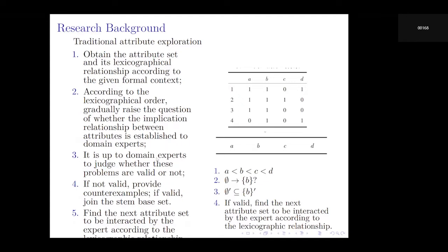The domain expert will judge it. If it's not valid, then provide a counter-example. If it's valid, then join the stem base set. Then, find the next attribute set to be examined by the expert according to the lexicographic relationship. An example of this process with the attribute set is shown on the right.